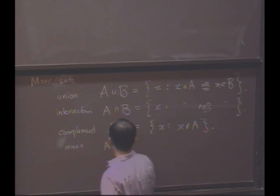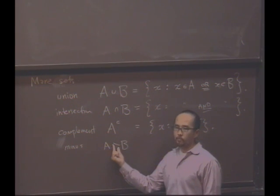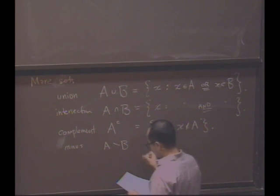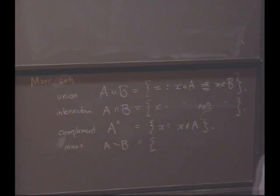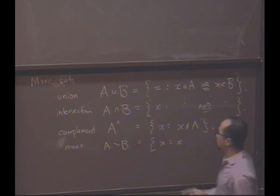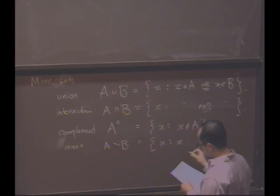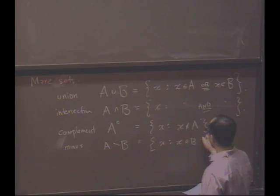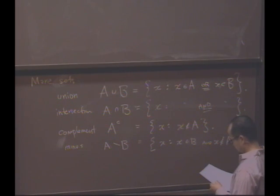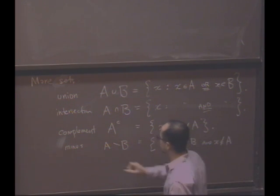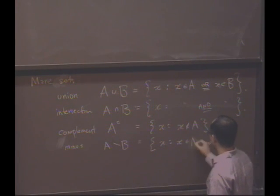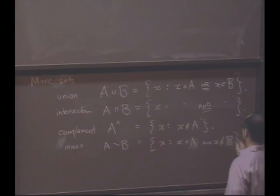There's the minus operation, which is written with a backslash. That's to remind you that these are sets. Take a guess as to what this notation might mean. X such that x is in A but x is not in B. My notes are backwards, I had B minus A here, so x is in A but x is not in B.